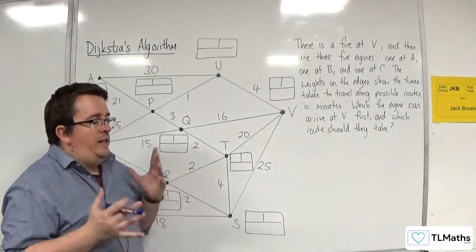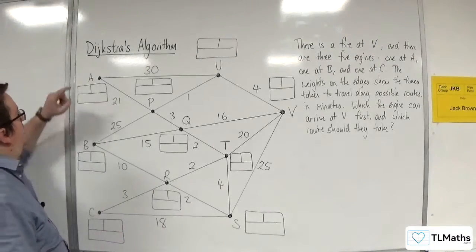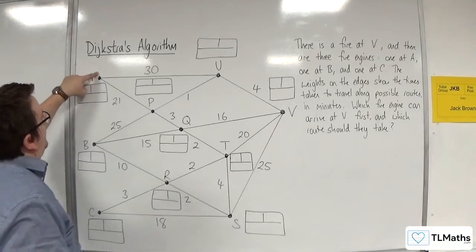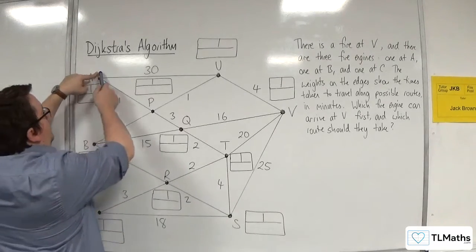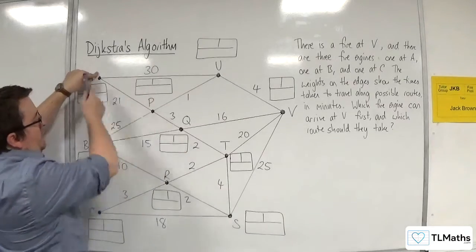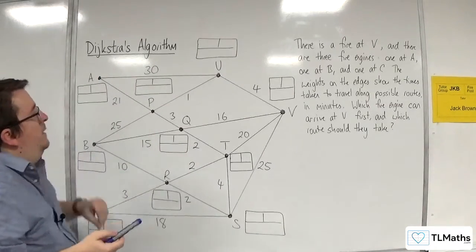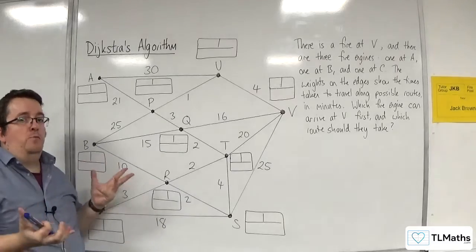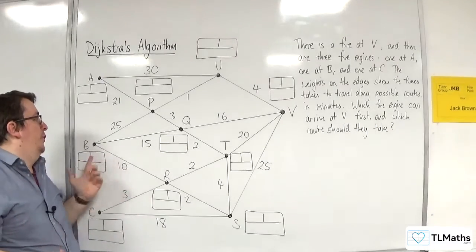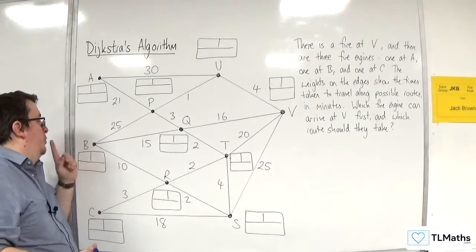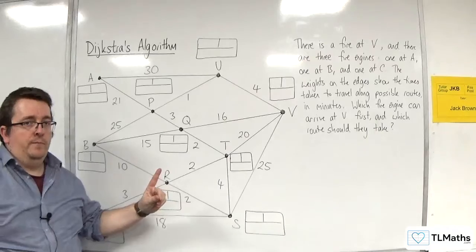Well, remember that when you perform Dijkstra's, if I start at A, what that's going to tell me is the shortest distance from A to U, from A to P, from A to Q, from A to T, from A to R, etc. Okay, and that will solve the problem for A, but it won't solve the problem for B, it won't tell me the shortest distance from B to V.